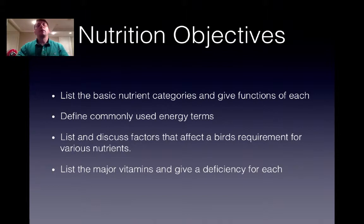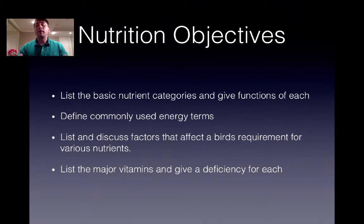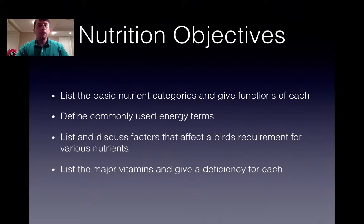The objectives for nutrition include listing the basic nutrients — energy, protein, carbohydrates, and fats — and providing their function, as well as looking at different sources of those nutrients commonly found in feed. We'll define some commonly used energy terms and acronyms you'll see repeatedly through the poultry curriculum and industry. We'll also discuss factors affecting a bird's requirements, such as age, sex, and breed, and look at micronutrients and deficiencies resulting from inadequate levels in the feed.